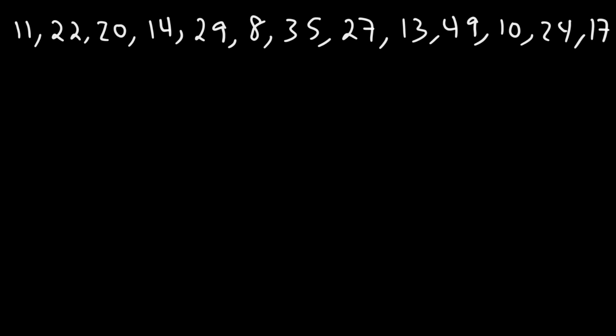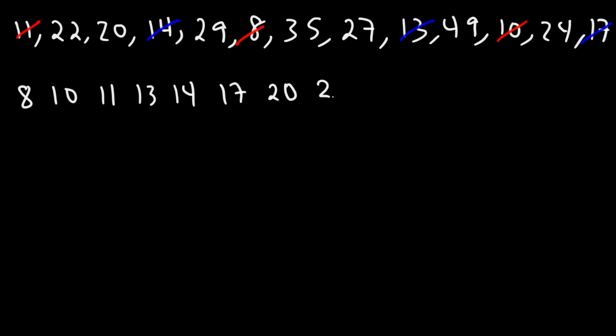First let's determine the three quartiles in addition to the minimum and the maximum. The first step is to arrange the numbers in ascending order. So the lowest number is 8, then 10, then 11. The next numbers are 13, 14, and 17. After 17 we have 20, 22, 24, and 27. After that is 29, 35, and then 49.